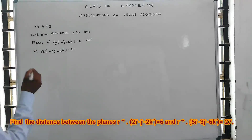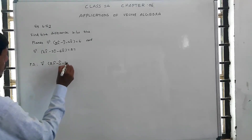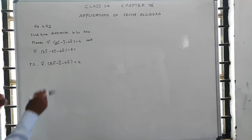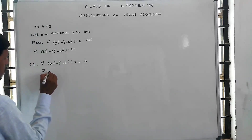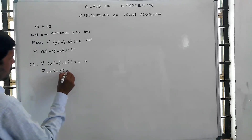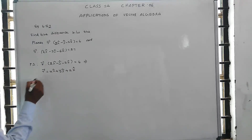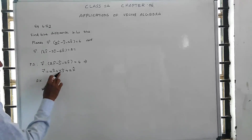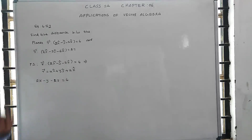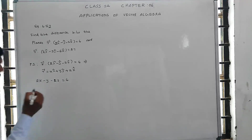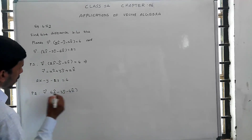The first plane is r-vector dot (2i − j − 2k) = 6, and the second plane is r-vector dot (6i − 3j − 6k) = 27.